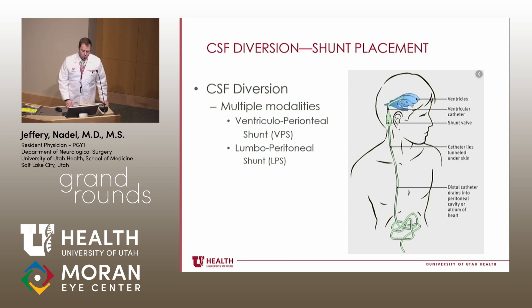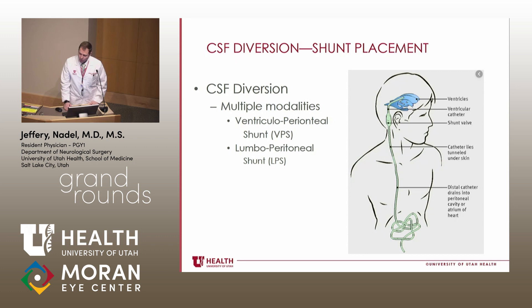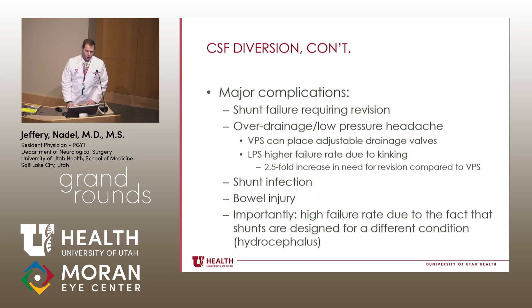Moving on to CSF diversion and shunt placement — there are multiple modalities, including ventriculoperitoneal shunts and lumboperitoneal shunts. Lumboperitoneal shunts tended to be performed more commonly in the past, but folks are tending to favor ventriculoperitoneal shunts now. A typical VP shunt has a proximal catheter inserted into generally the lateral ventricle, attached to a valve that controls CSF outflow, and then a catheter tunneled underneath the neck, usually into the abdomen. Shunt failure is a perpetual problem, most often from obstruction.